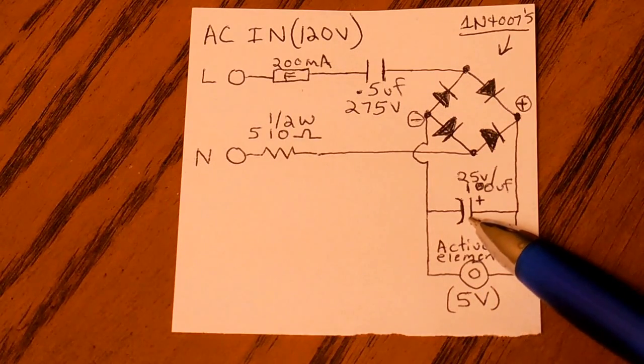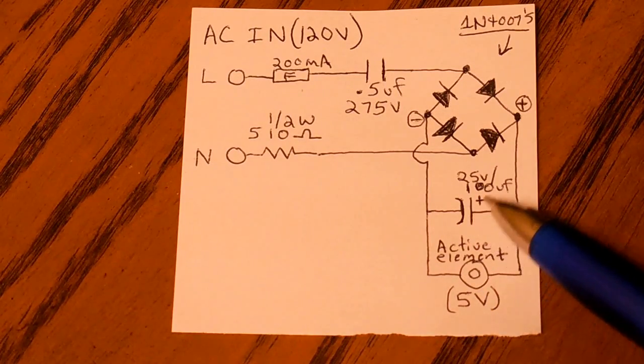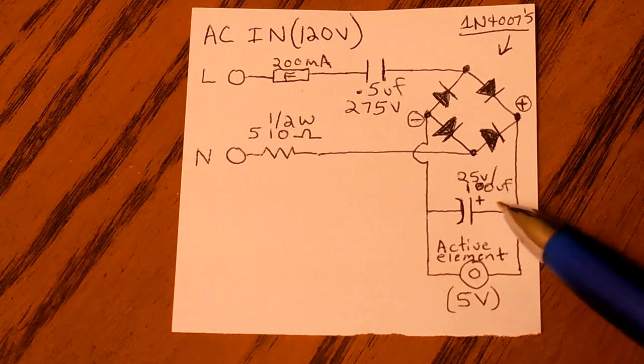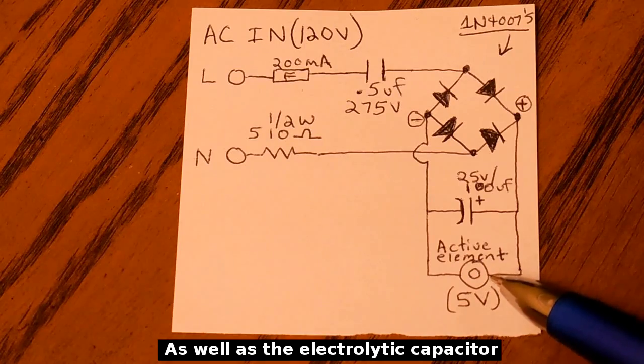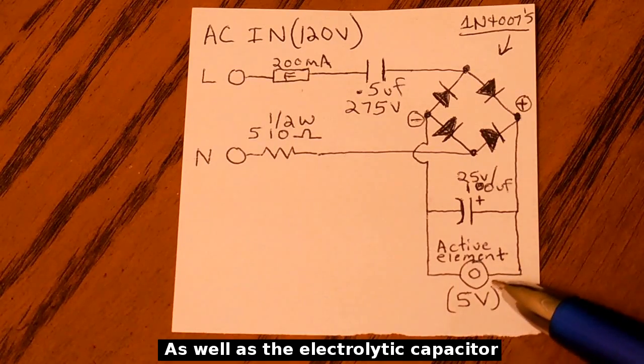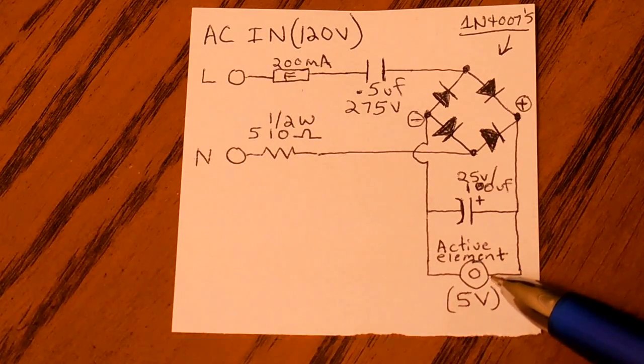On the negative output of the rectifier, it goes into the negative of an electrolytic capacitor, which is 25 volt rated, 100 microfarads. Positive goes into the positive side of the element, and the negative goes into the negative side of the element. 5 volts.